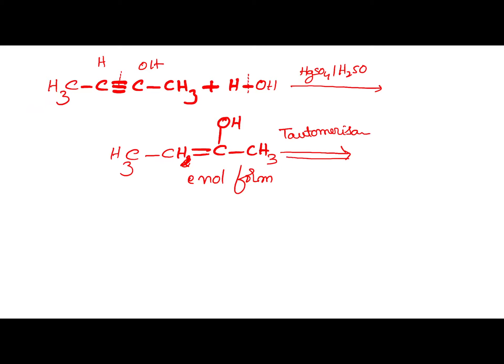H indirectly migrates to the alpha carbon and shifting of the pi bond. Of course, this is not the mechanism - this is just for understanding how to write the keto form.